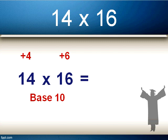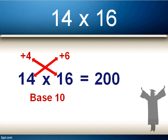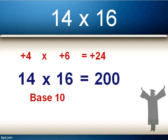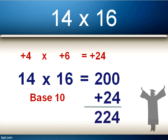The first step to getting our answer is to either add 4 to the 16, which is 20, or 6 to the 14, also 20. It doesn't matter which you choose — the answer is exactly the same: 20. But as before, don't think of it as 20; it's base 10, so we multiply by 10 and it's actually 200. The second step is to multiply those two top numbers together: plus 4 times plus 6. 6 times 4 is 24, and plus times a plus is a plus, so it's equal to plus 24. We then add that to the number from step 1: 200 plus 24, which is equal to 224. So 14 times 16 is equal to 224.